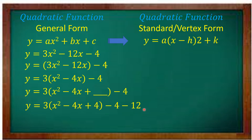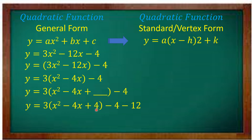What do we add to x squared minus 4x to make it a PST? Get half of the middle term: half of negative 4 is negative 2. Negative 2 times negative 2 is positive 4. So we have 3 times the quantity x squared minus 4x plus 4. But since this positive 4 is inside the parentheses and multiplied by 3, we actually added 3 times 4, which is positive 12 to the expression. So we subtract 12 from the separated constant, negative 4.